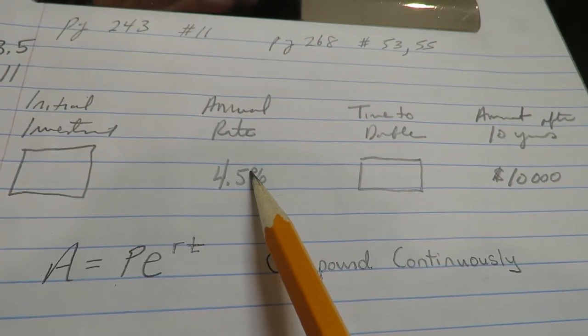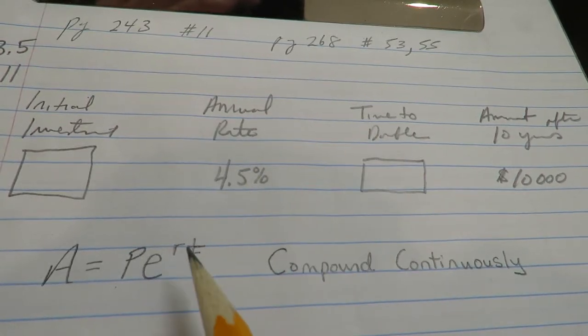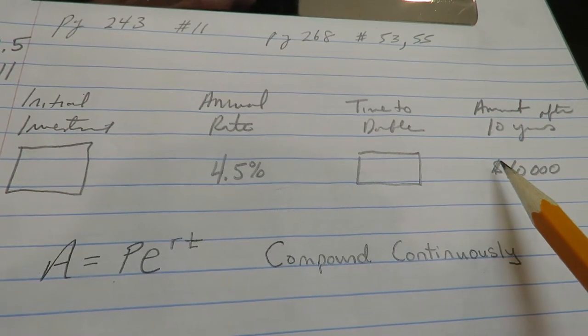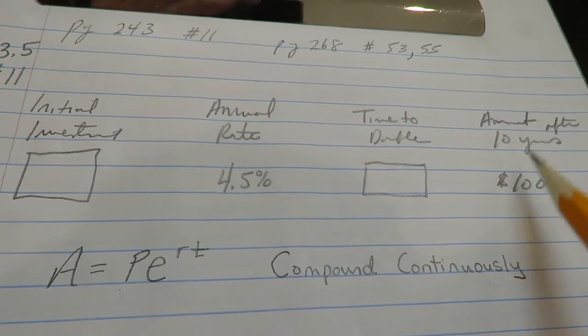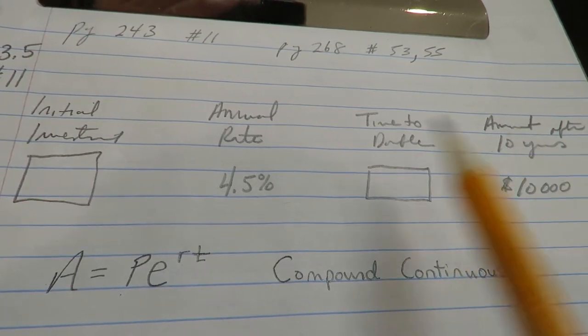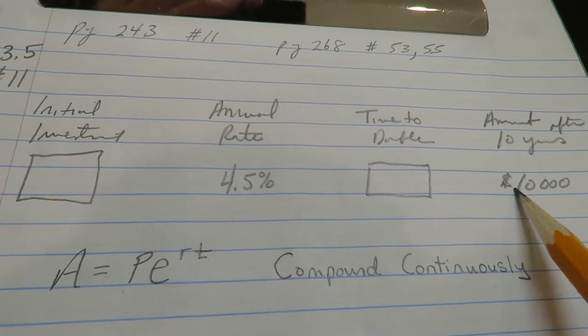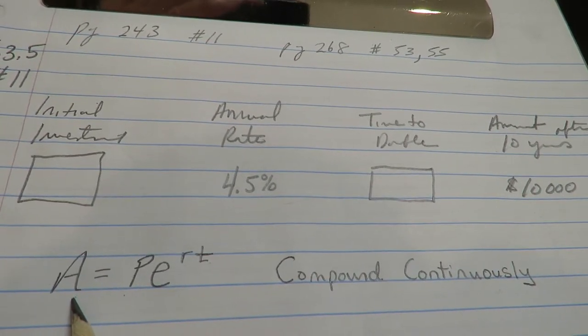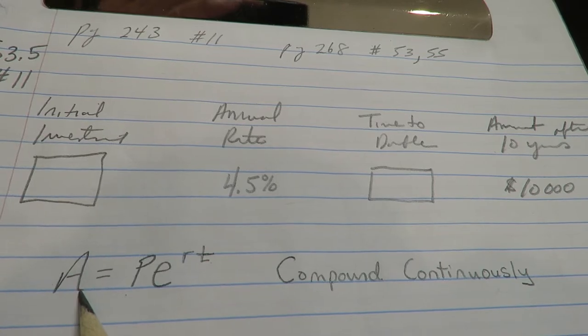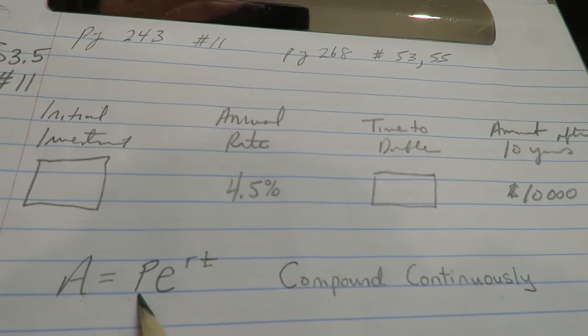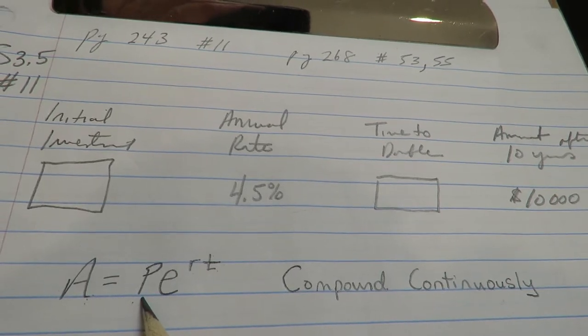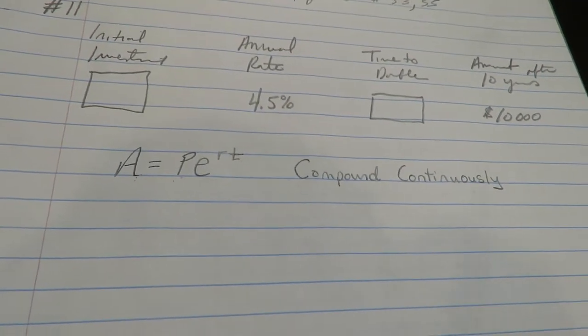So let's look at what they did give us. They gave us the annual interest rate, so they gave us r. And they gave us after 10 years it's $10,000. So they gave us t and they gave us an A value. So if you notice, they gave us A, r, and t. So that allows us to solve for P. P would be an unknown, so let's start there.